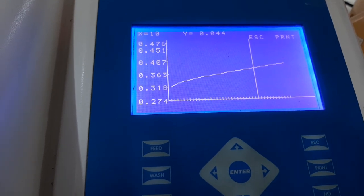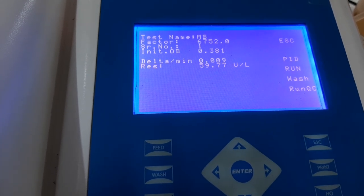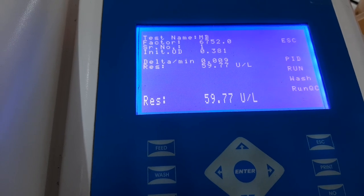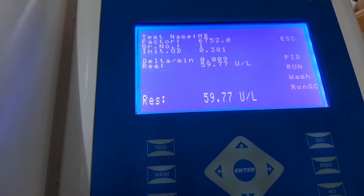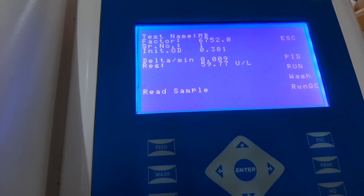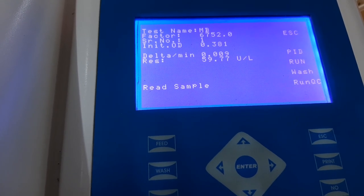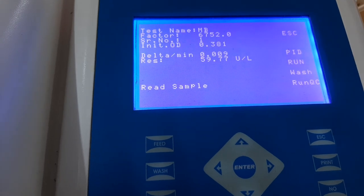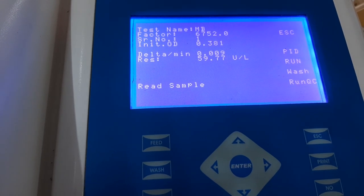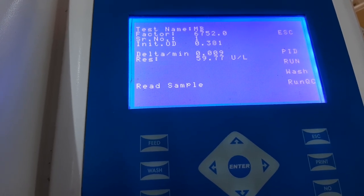After the read time is over, the machine will calculate the delta absorbance per minute and also give the result by calculating it by the factor. If you wish to run more patient samples, follow the exact same procedure. This is the correct way to perform CKMB test. Thank you and we hope this video has been helpful for you.